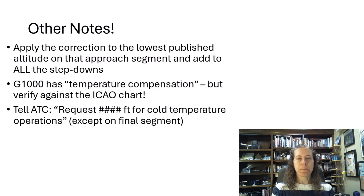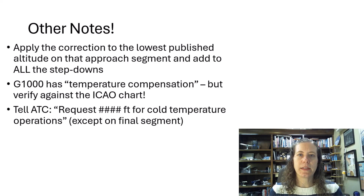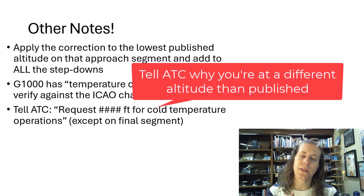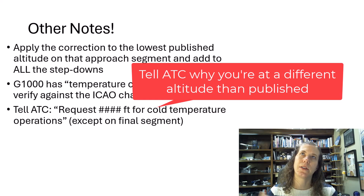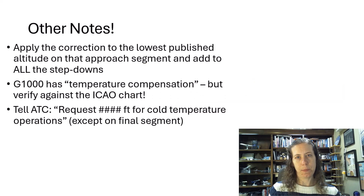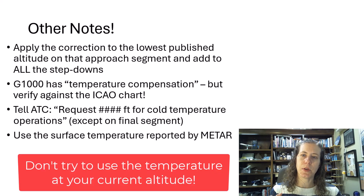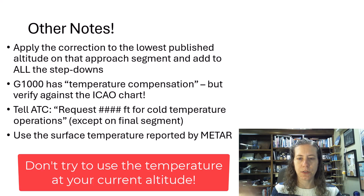You also have to tell ATC. An example of phraseology from AIM: 'Request 7700 feet for cold temperature operations.' You do not have to notify ATC for corrections made to the final approach segment, but for intermediate segment or missed approach corrections, you would tell ATC — otherwise they'd wonder why you're not flying at the altitude printed on the chart. When doing the compensation, use the temperature from the METAR — the surface temperature. Don't try to use your temperature aloft while flying the approach. Just use the surface temperature from the METAR.